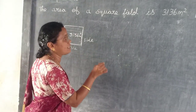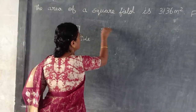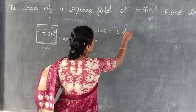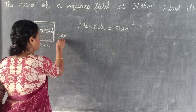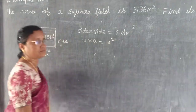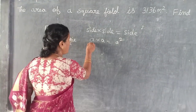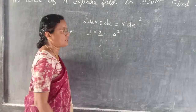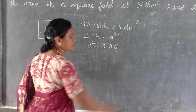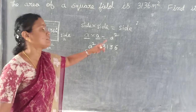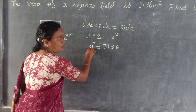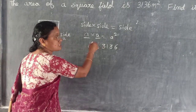What is the formula to find out the area of your square? Side into side, equal to side squared. Suppose if you specify that this is A — A into A, that is A squared. So you want to find out A. A squared is 3136 meters square, so you want to find out that square root.